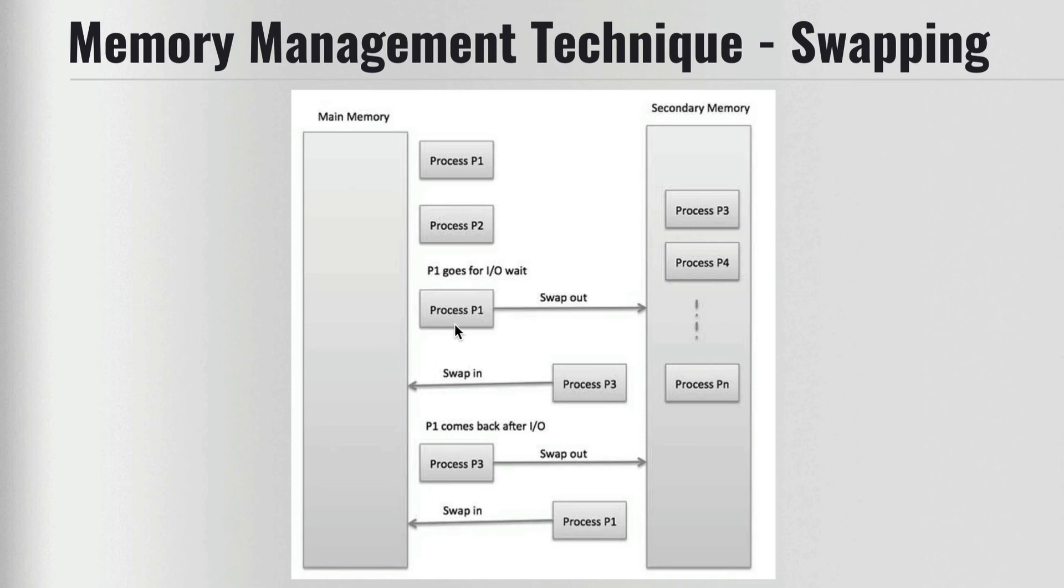Process P1 moves out - it goes for input/output wait - and process P3 comes in. Then after the input/output operation, when we need, we can again send P3 back to secondary memory using swap out, and then bring process one back in. That is your swap in and swap out - that's the concept of swapping.